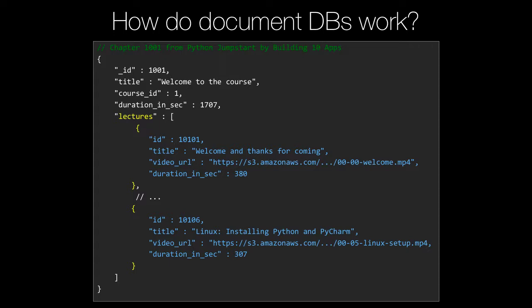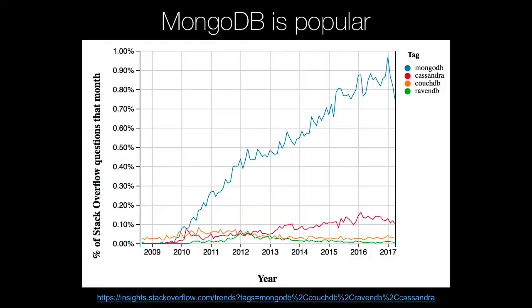Which document database happens to be the most popular, the most widely used? You can probably guess — it's MongoDB, given this course. However, you probably didn't guess how much more popular MongoDB is relative to its other NoSQL friends. We've got CouchDB, which is way down there and not trending well. We've got RavenDB, which is basically not used. Cassandra, which kind of peaked around 2016 and is heading down. MongoDB is just much, much more popular than these. If you want to experiment with this data yourself, you can check out the link at the bottom. MongoDB is really, really popular — by far the most popular, widely used document database.